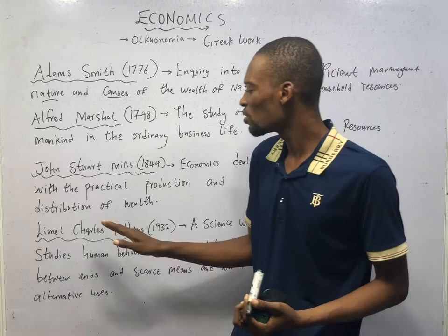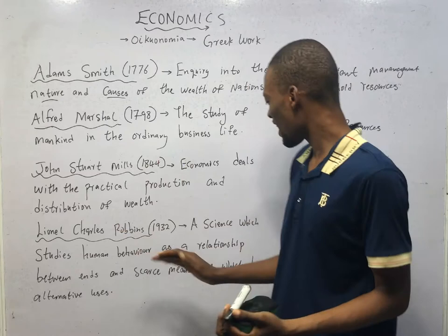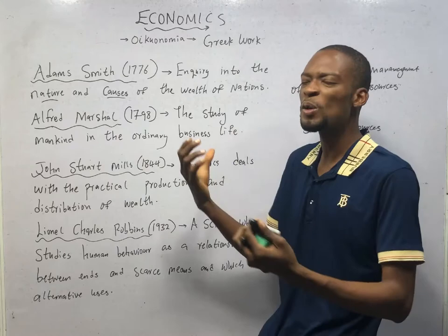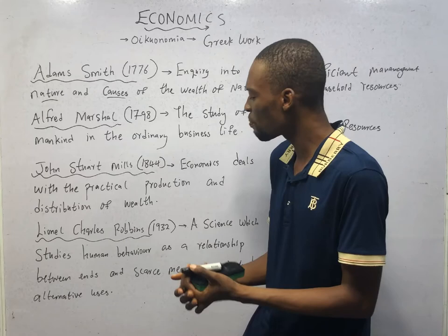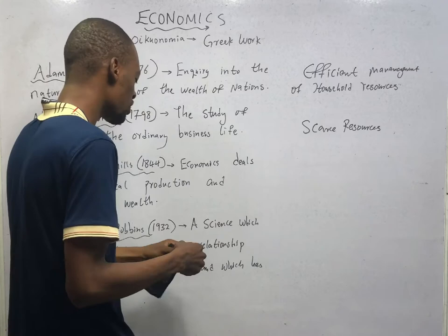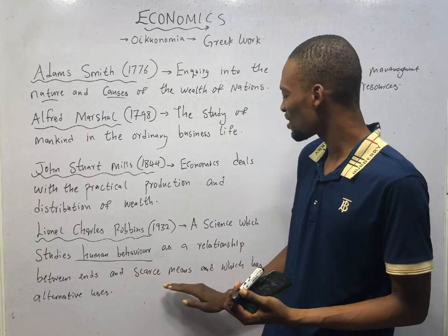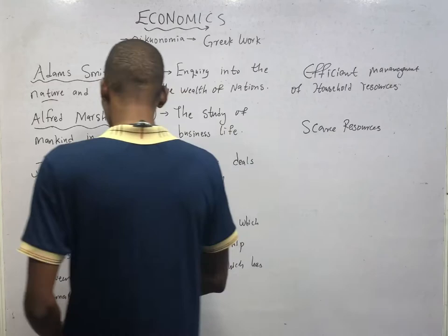Lionel Charles Robbins in 1932 defined economics as a science which studies human behavior as the relationship between ends and scarce means which have alternative uses. The most acceptable definition of economics is this one — economics is a science which studies human behavior as the relationship between ends and scarce means which have alternative uses.